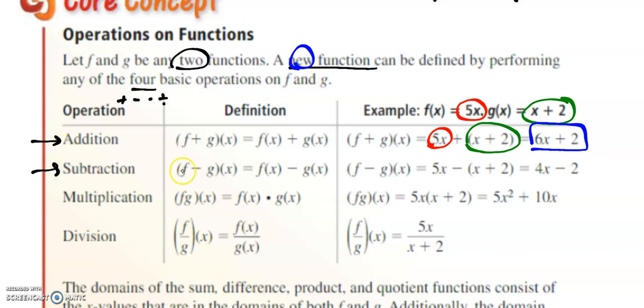Subtraction, similar concept. (f - g)(x) will be equal to f(x) - g(x). So here I have 5x minus, notice the parentheses, x + 2, so then I'll distribute, and I end up with this brand new function of 4x - 2.